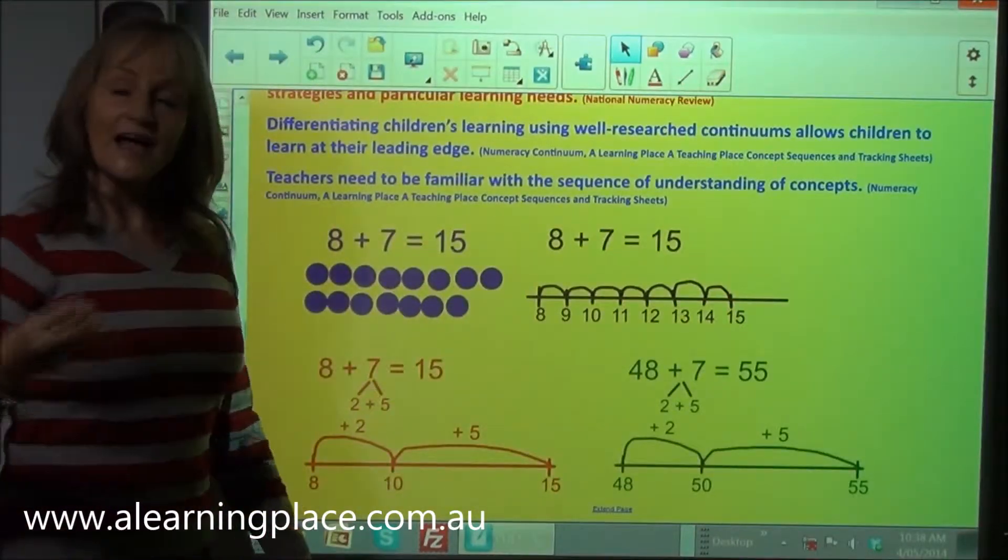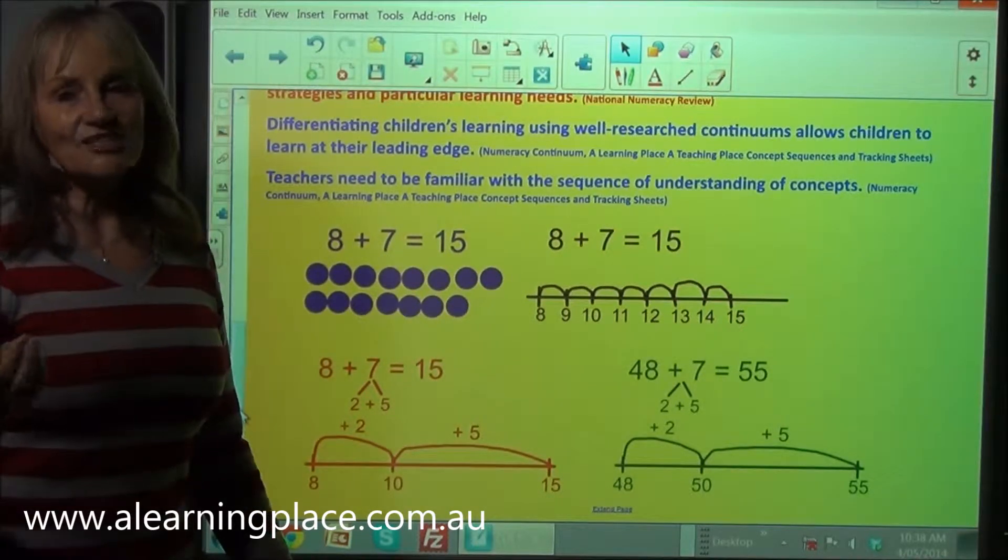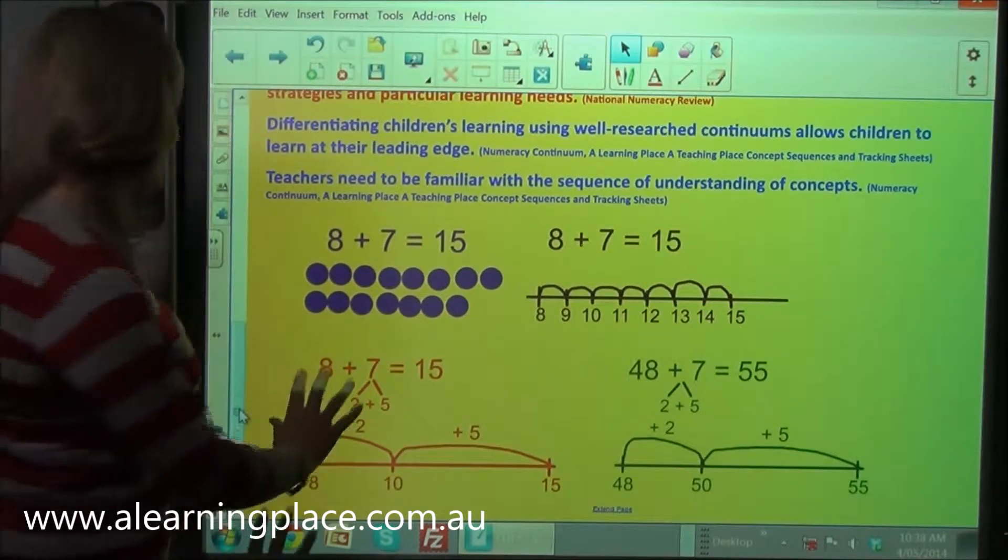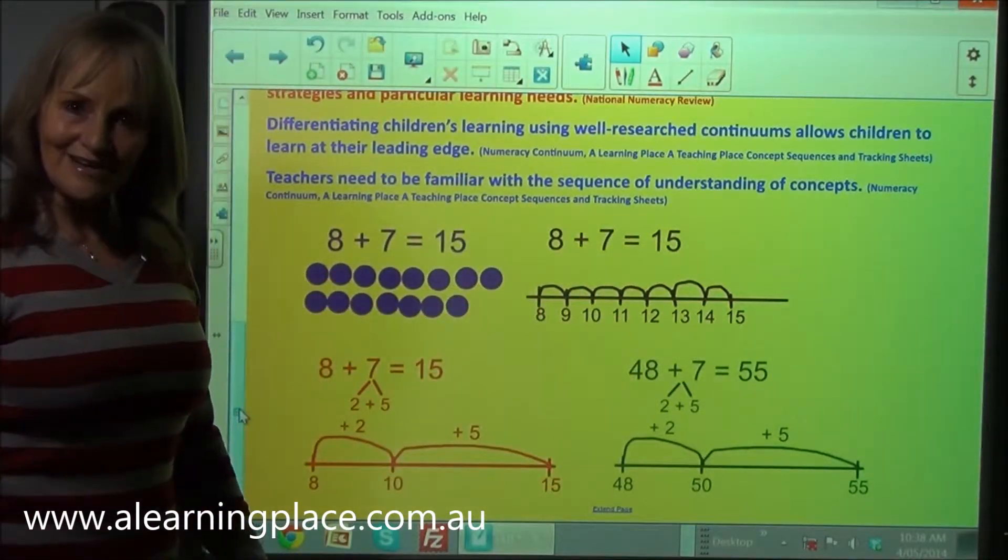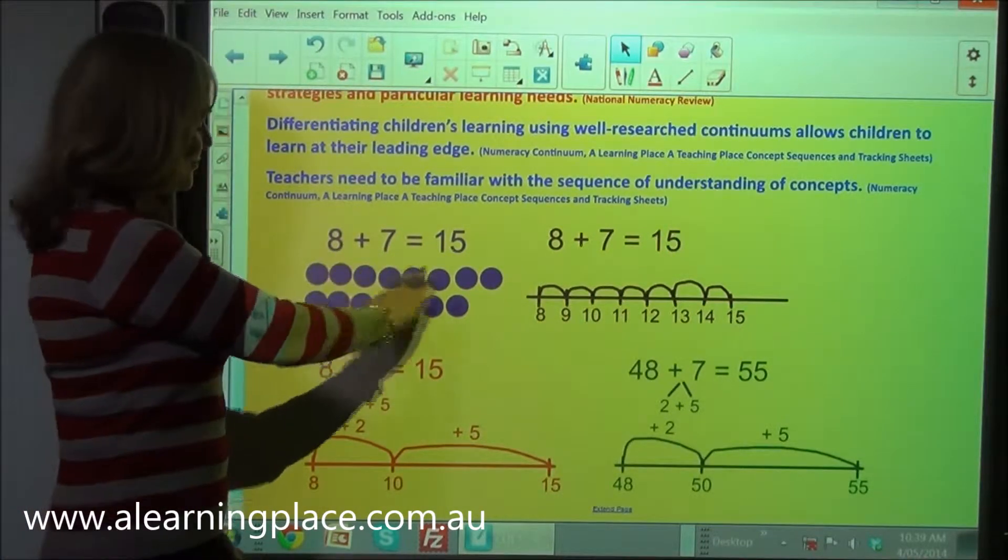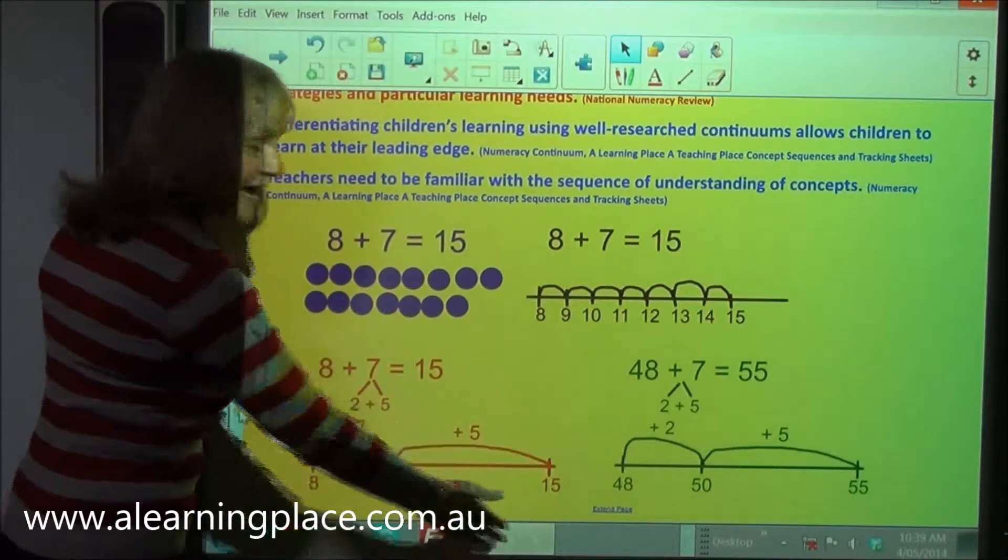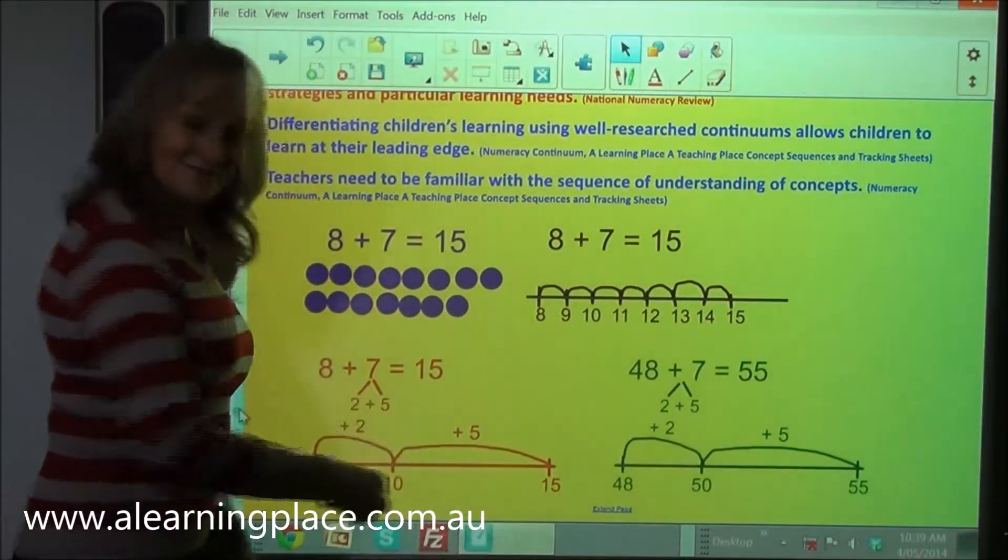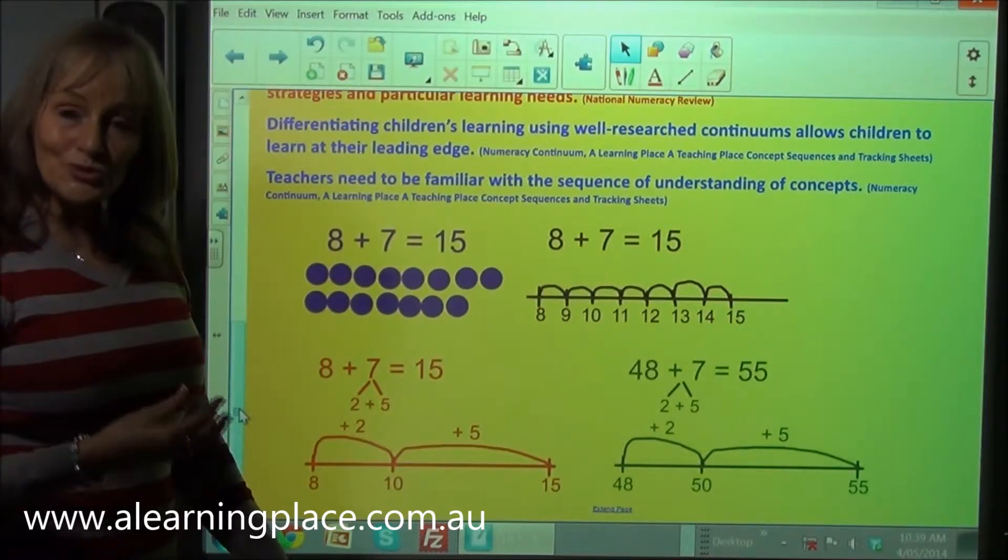Now how can you actually differentiate in one lesson? This is something that teachers, I'm in classrooms all the time, and this is something that teachers are always asking me. So for example say these are the levels that you've identified in your class. You've got some children when they add single digit numbers are still using counters, some children are counting on, some children are using things like friends of 10, partitioning and place value, and then you've got some children who can actually add a single digit number to a two digit number.